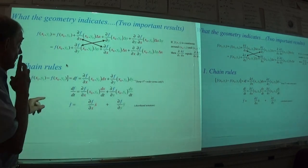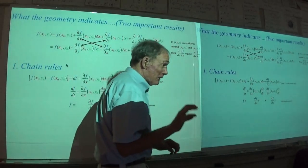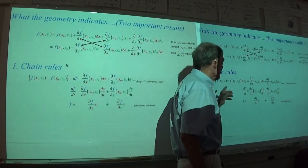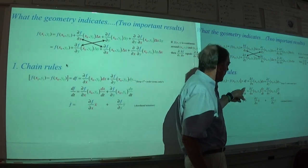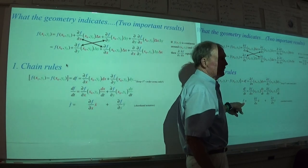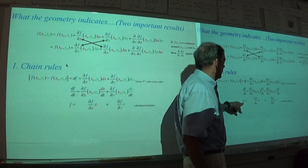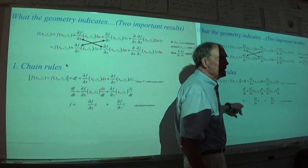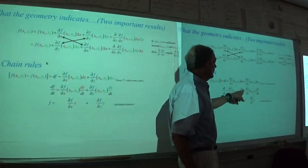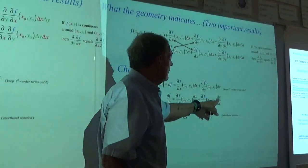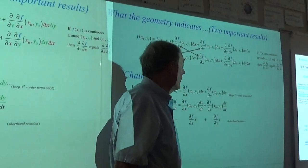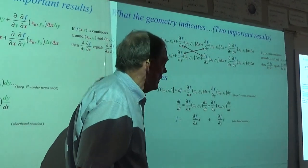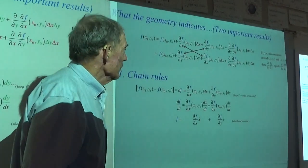Before we go on, there's the chain rule — you've all seen that in calculus. Our notation for a time derivative, just to save space, will be a dot — a little unfortunate because sometimes the dot gets lost in pixels. So dx/dt will have a dot on it, and dy/dt will just be a y with a dot on it. This is standard shorthand notation.